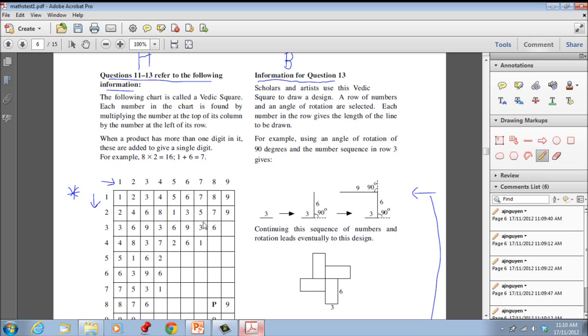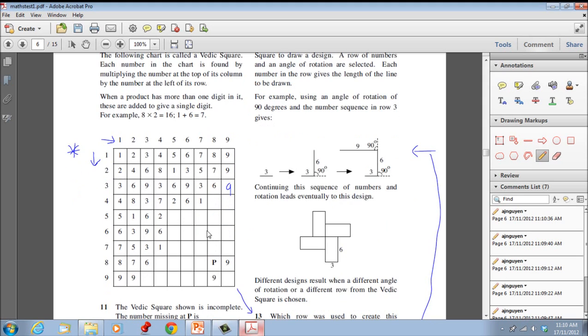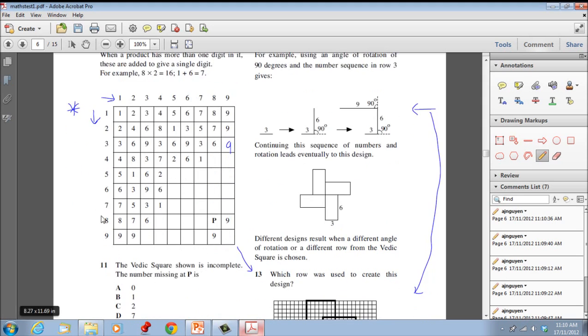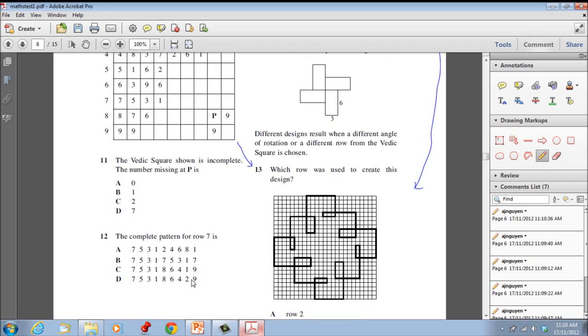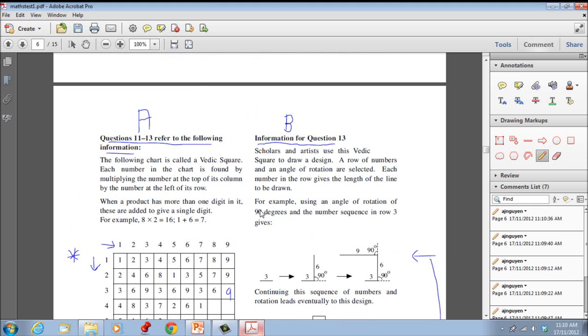You can see here that 9 times 3 is 27, 2 plus 7 is 9. I'll draw my 9 here. So you can see that you can actually go about filling this in yourself. This obviously forms the basis of questions 11 and 12, which for most people are quite standard questions.